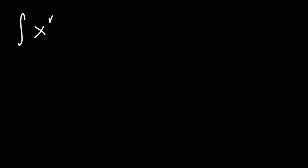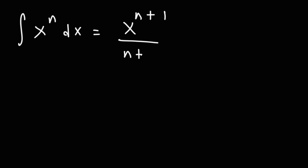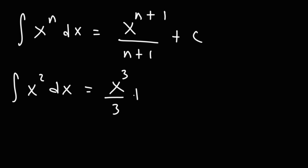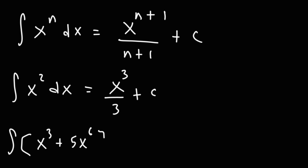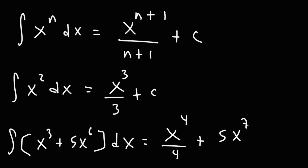The next formula is associated with the power rule: the antiderivative of x to the n is x to the n plus 1 divided by n plus 1, plus c. For example, the antiderivative of x squared gives x cubed over 3. For x cubed plus 5x to the 6, you get x to the 4 over 4 plus 5x to the 7 over 7, plus c.